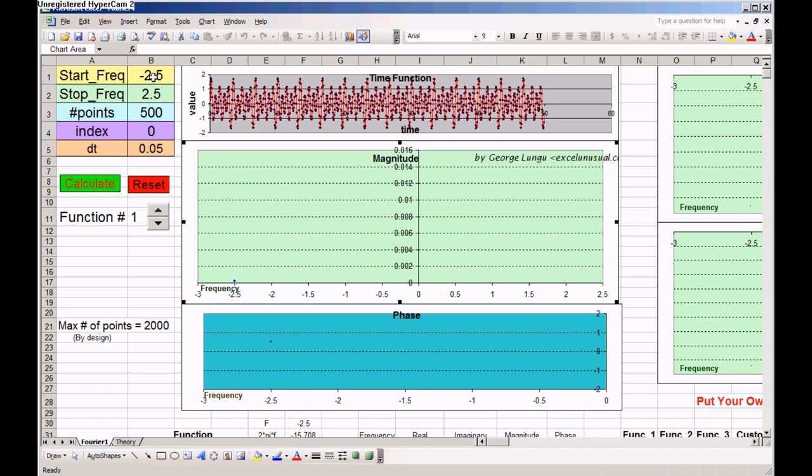As input parameters, we can set up the start frequency, the stop frequency, the number of frequency points over which we need the Fourier transform to be calculated, and the index, but this is not an input parameter.